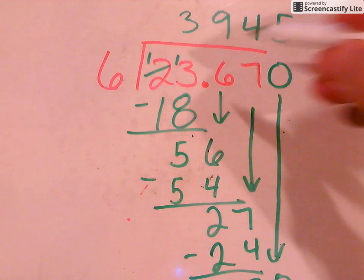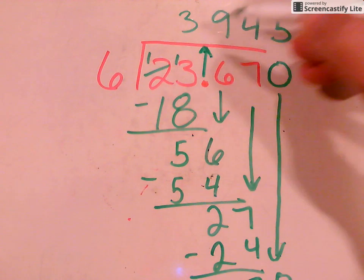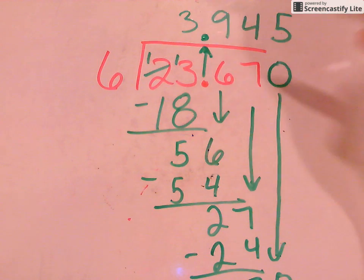The last part of this step then is to take my decimal and pop that decimal straight up, put it right above it in the answer. So my answer would be 3 and 945 thousandths or 3.945. So just another way to look at solving a division problem by throwing a 0 on the end there to make it work.